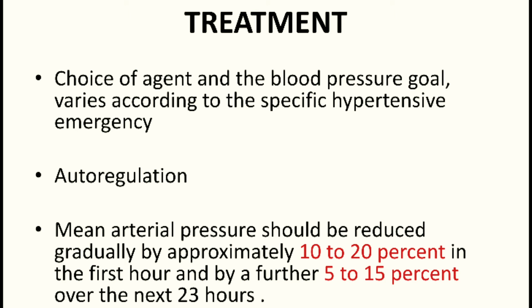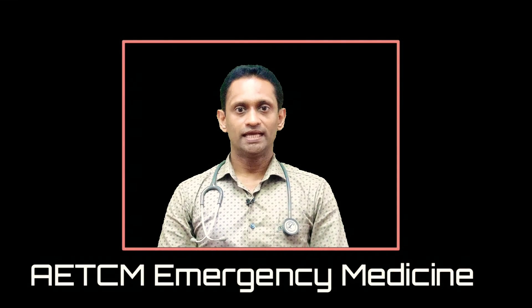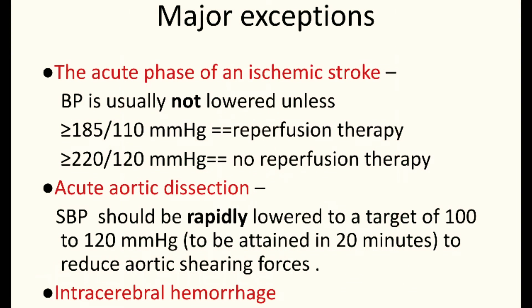Autoregulation maintains organ perfusion when blood pressure is high. If we rapidly reduce blood pressure, autoregulation is disrupted and perfusion can be impaired. The usual target is to reduce mean arterial pressure gradually by 10 to 20 percent in the first one hour, and 5 to 15 percent over the next 23 hours. There are some major exceptions.